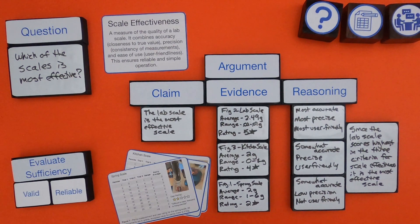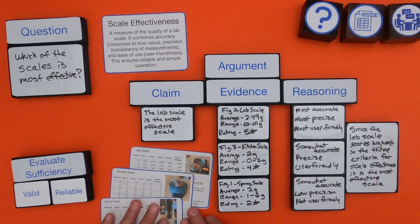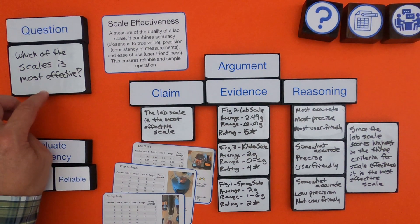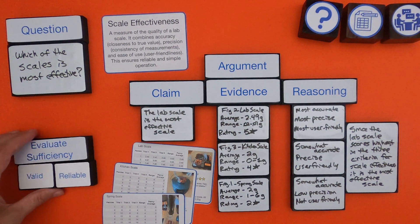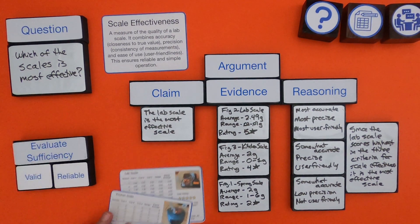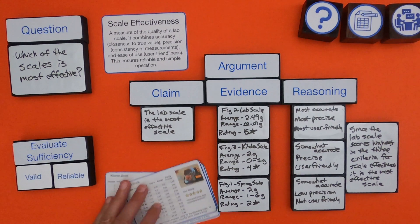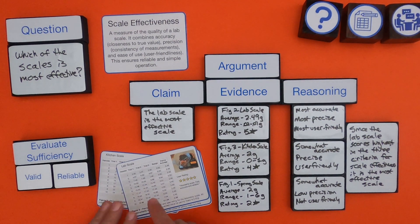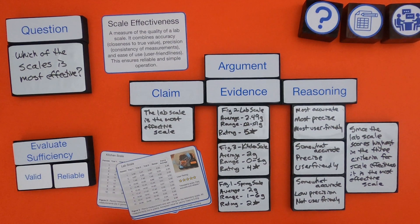As you look at evidence, the first thing you want to do is check validity — is the evidence valid to answer the question? That's why we got rid of the music scale earlier. Then ask: is the data reliable? The lab scale is reliable because the data is consistent through multiple trials and has more precision. This is how you lay out and present an argument based on scale effectiveness.